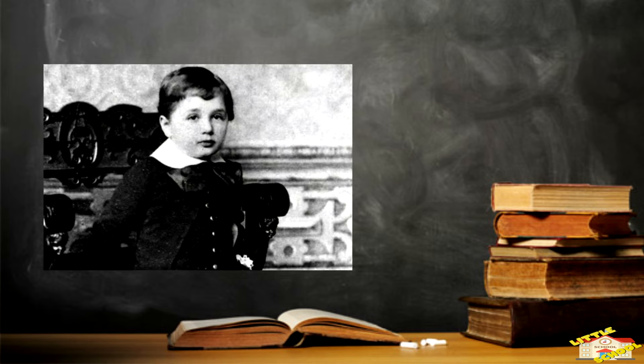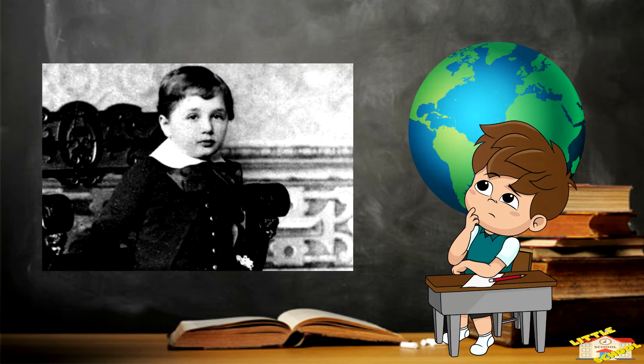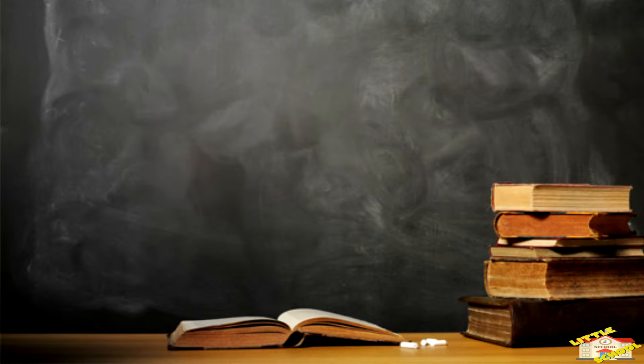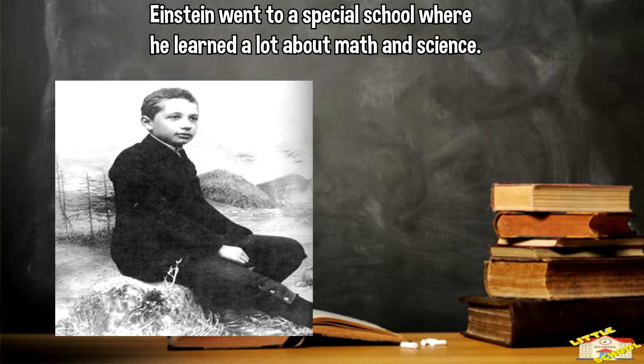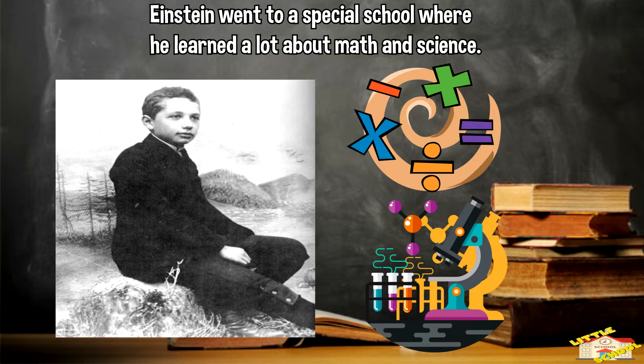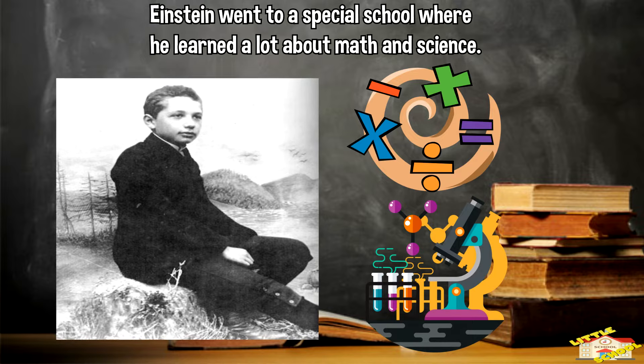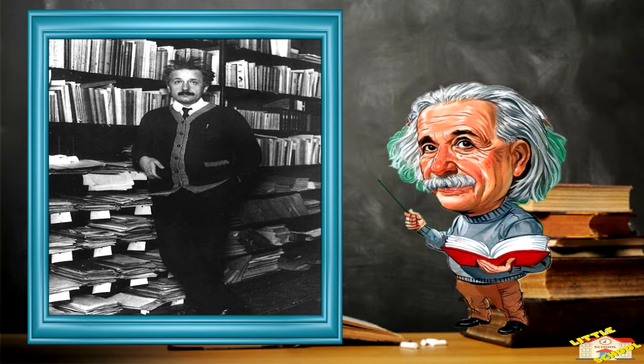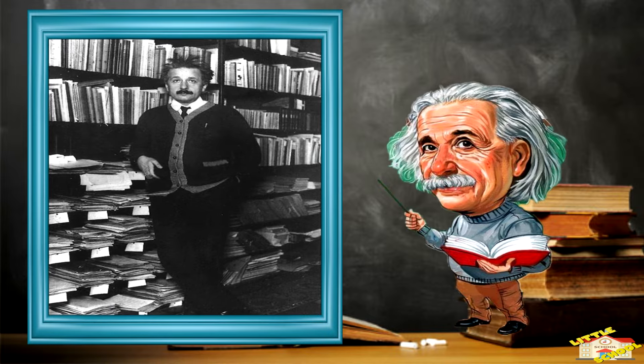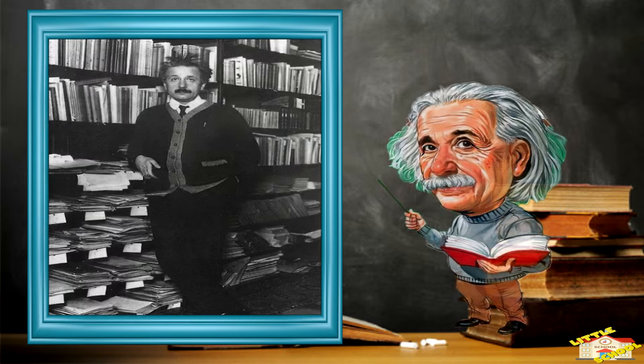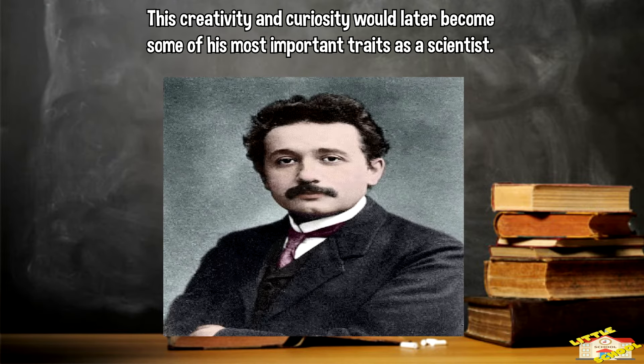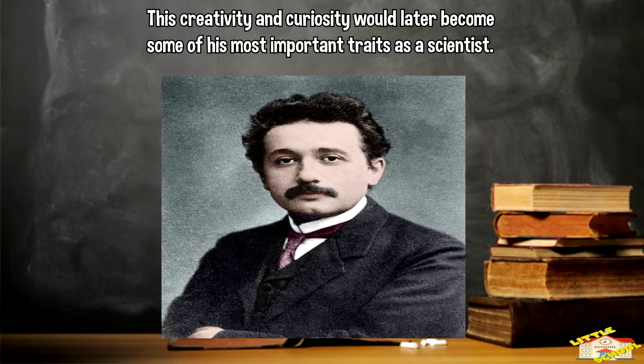As a child, he was curious and had a lot of questions about the world around him. When he was a young man, Einstein went to a special school where he learned a lot about math and science. He didn't really like the traditional way of teaching, and he often thought about things in his own unique way. This creativity and curiosity would later become some of his most important traits as a scientist.